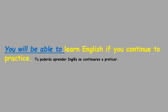Como não podes usar 'can' com todos os tempos verbais — só podes usá-lo no presente — tens de substituir o verbo 'can' com 'be able to'. Por exemplo, se quiseres expressar-te no futuro, tens de usar 'be able to', 'will be able to'. You will be able to learn English if you continue to practice.